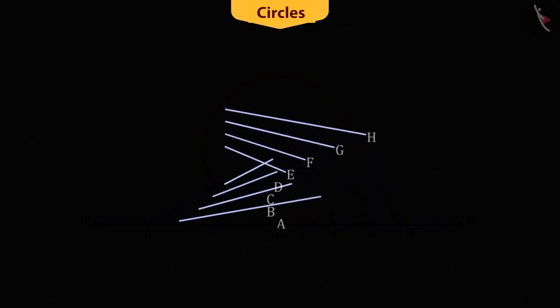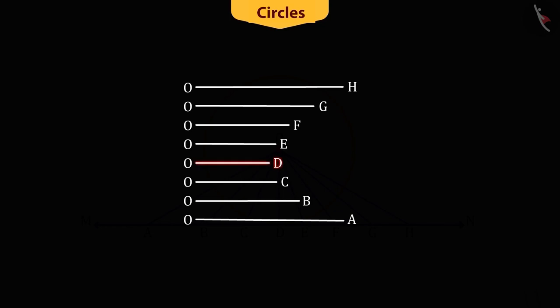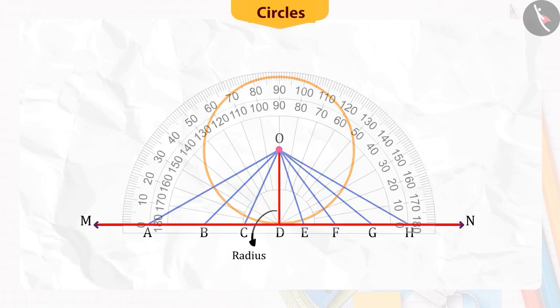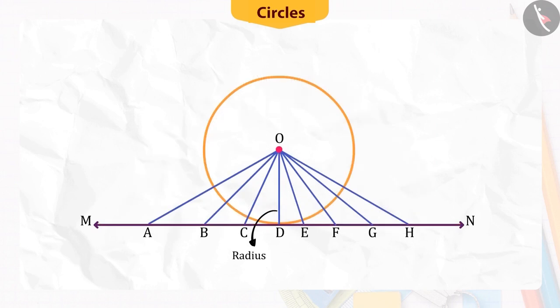On measuring these, we find that the line OD is the radius of the circle. Its length is the shortest of all. Also, if we measure the angle between the tangent MN and the line OD, you will find that it is right angled. That is, line OD is perpendicular to tangent MN.